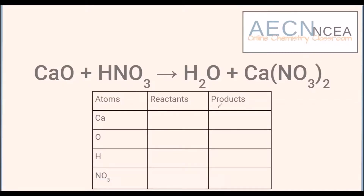Let's start counting. We have one calcium on the reactant side — the two refers to everything within the bracket, and calcium is not within the bracket, so only one calcium. For oxygen, we ignore the O3 inside the NO3 because that's part of our nitrate unit, so we have one oxygen. On the product side, one oxygen — so far balanced. For hydrogen: one on the reactant side, two on the product side — not balanced. For nitrate: one on the reactant side, two on the product side — not balanced.